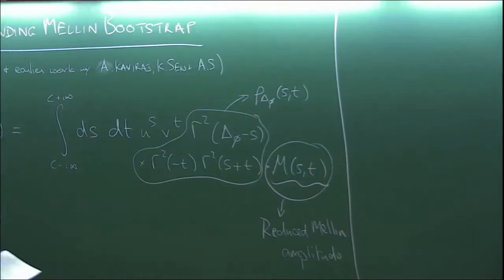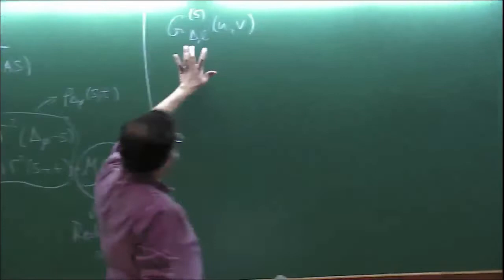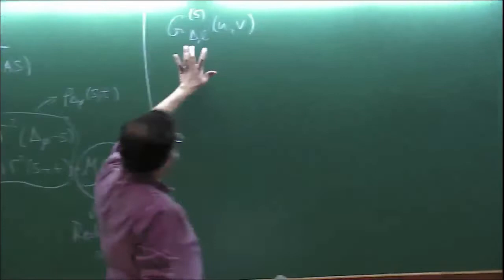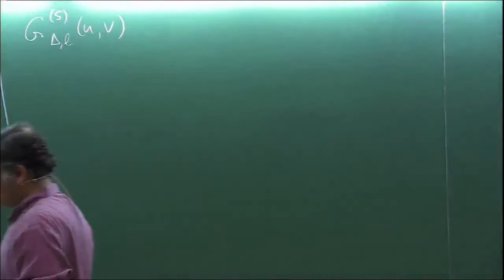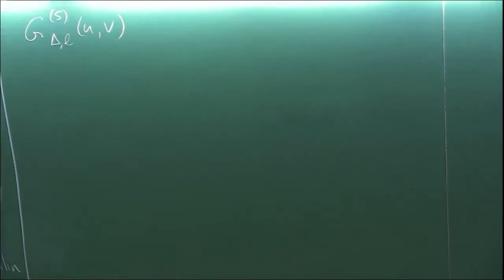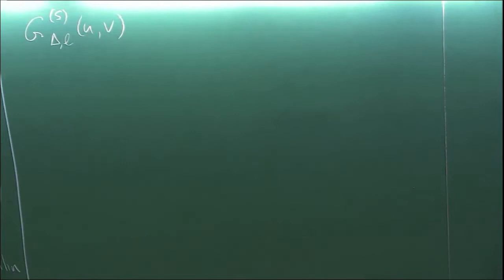For instance, the conformal block, labeled by the spin representation and the conformal dimension — this in position space is known explicitly in a power series expansion, but in a nice closed form only in two and four dimensions, otherwise not in any very explicit form. The superscripts I will use will refer to the channel: this refers to the S-channel conformal block when you're taking operators one and two together in a four-point function labeled by one, two, three, four. The conformal block in that channel is what I'll denote by this.